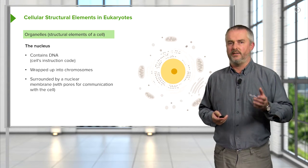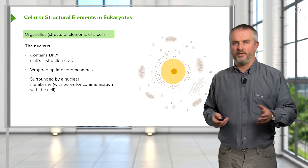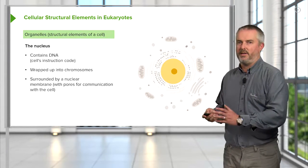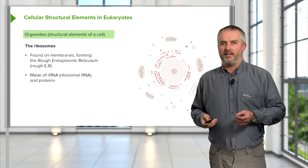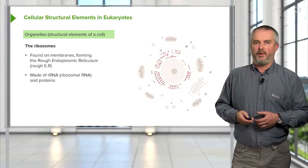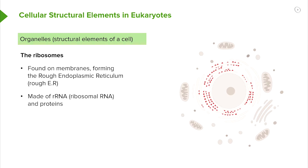But it also needs to have that information available to the cytoplasm so it can function. So the pores allow that information to be copied and moved through into the cytoplasm. In fact, the copies of the genes, what's called mRNA, they go on to the ribosomes, which you see there in red.